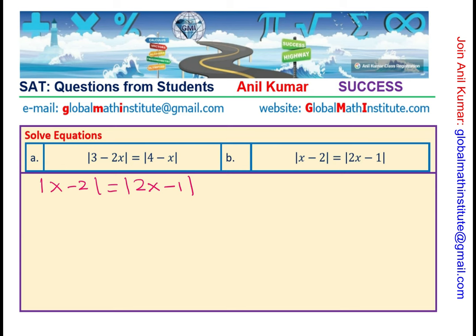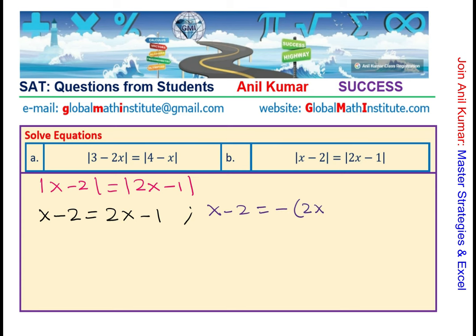So, applying this strategy, just learn. We will solve first for the equation x minus 2 equals to 2x minus 1. And then, we will solve for the second equation which is x minus 2 equals to negative of 2x minus 1. Because negative of 2x minus 1 absolute value will also be 2x minus 1. Makes sense? Perfect.